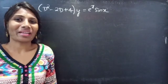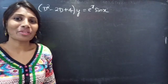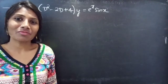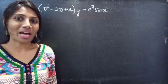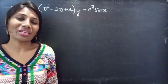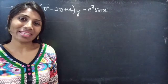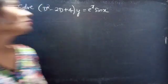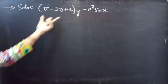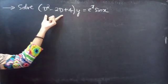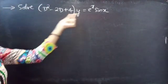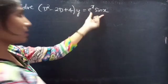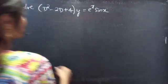Hello everyone, this is Zia Kalpana here. In this video, we are going to solve a differential equation from higher order linear differential equations. So let's get going. Problem: D squared minus 2D plus 4 into y equals e to the power x sine x.